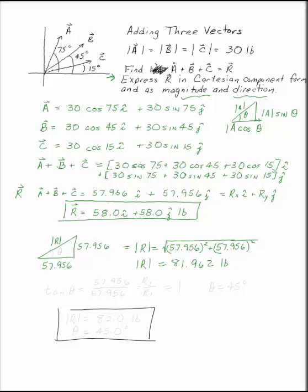To find the direction, we were asked for the magnitude and the direction. Let's let this be theta. We want to find theta. The tangent of theta is going to be 57.956, or Ry, over 57.956, or Rx. In this case, those are both equal to 1, so theta has to be 45 degrees.